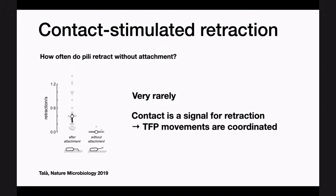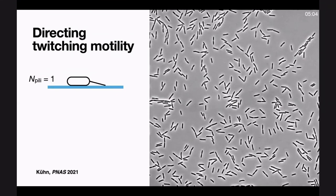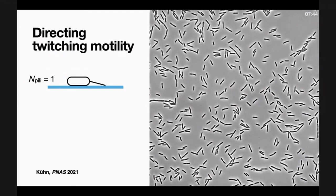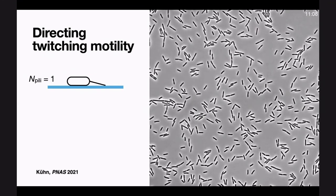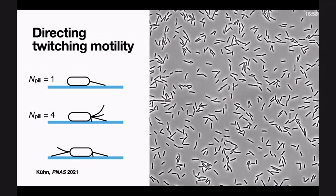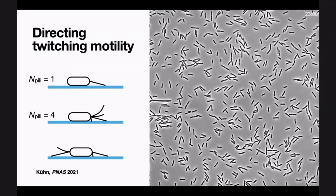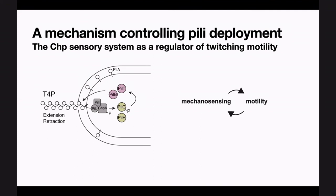Following up on this, we wanted to know what happens with many pili. With one pilus, you extend it, it attaches, you retract to pull yourself forward. But for surface motility, you actually have many events of pili extension-retraction because pili are not long enough to generate displacement over many micrometers. So what happens when you have many pili? Do they go in the same direction or are they distributed on both sides, pulling the cell back and forth? We knew about a mechanosensitive system that might regulate this motility — it's called the CHIP system, similar to the chemotaxis system of E. coli.